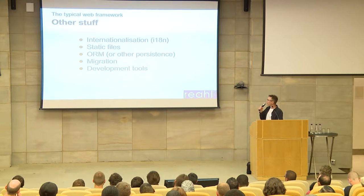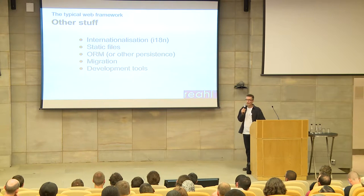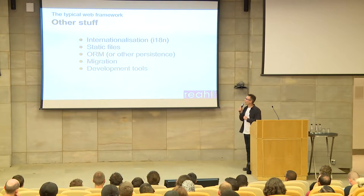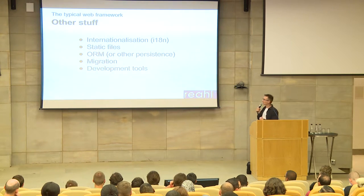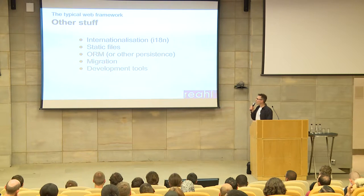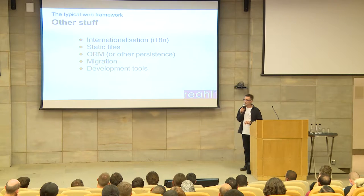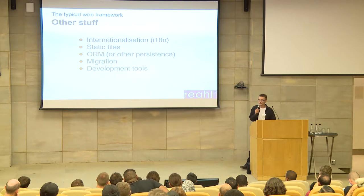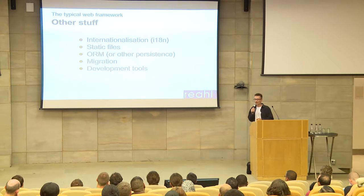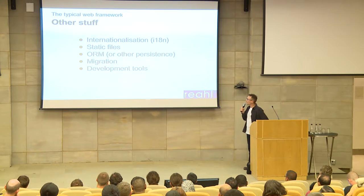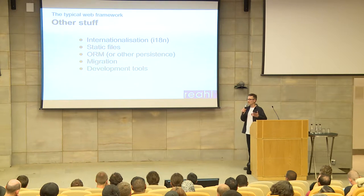There's other stuff I don't want to go into in detail. Internationalisation has to do with all the text in your web pages — if you want to render them for different languages, you need a way of translating everything and knowing which language to display. There's usually a bunch of static files to serve that form part of your application. And although people don't often talk about this in the context of web applications, you probably need an object-relational mapping tool to persist your program. And there's also the question of how you upgrade database schema when things change in production.